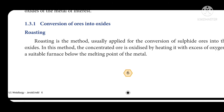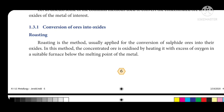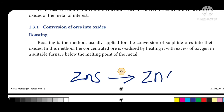Roasting means heating with excess of air. Roasting is the method usually applied for the conversion of sulphide ore into oxides. For example, zinc sulphide can be converted to zinc oxide using this roasting process. The concentrated ore is oxidized by heating it with excess of oxygen in a suitable furnace below the melting point of the metal.